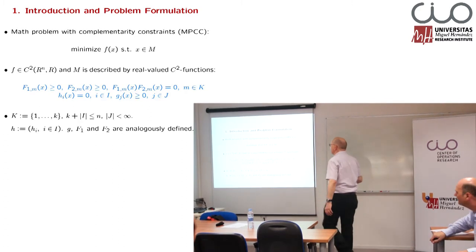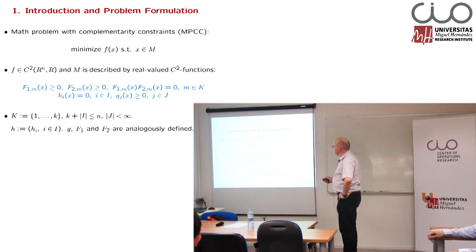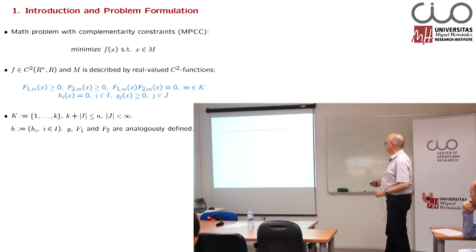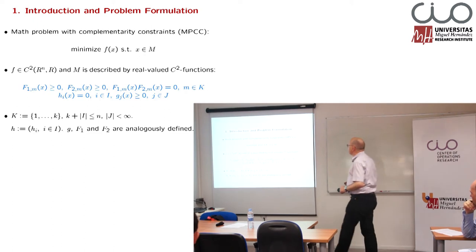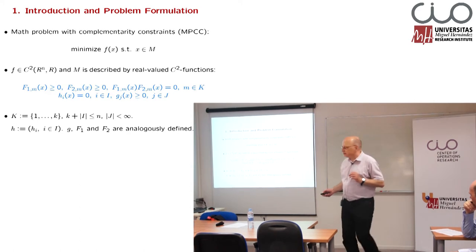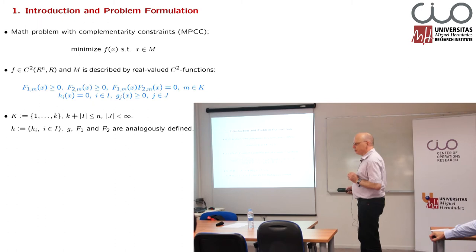What we are looking at is the following. We have a function F which is twice continuously differentiable. If we only look at first order conditions then it is enough to assume C1. And we have complementarity constraints — these are the blue ones here. So we have pairs of constraints F1_m and F2_m which are supposed to be non-negative, and the corresponding product is always equal to zero.